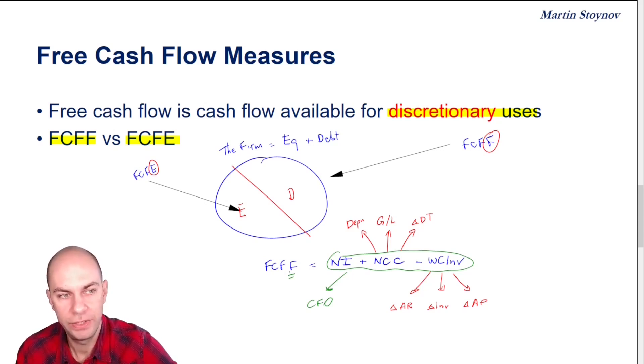And because we started with net income, we have already subtracted interest, right? Interest has been subtracted.